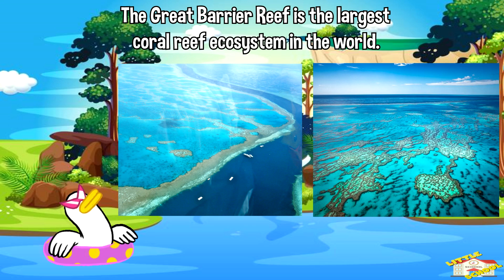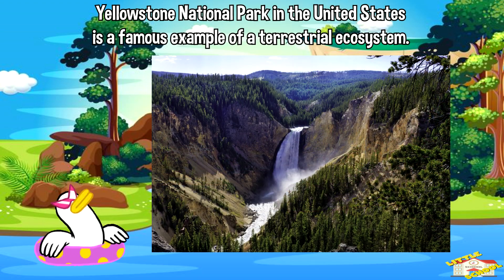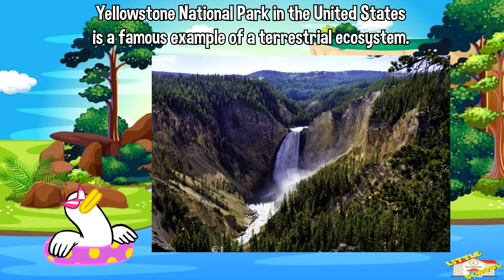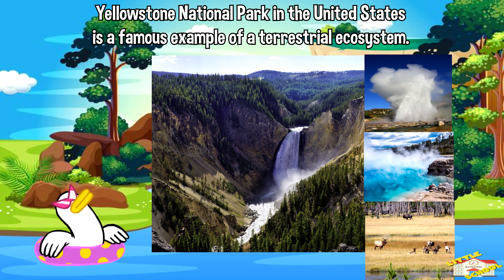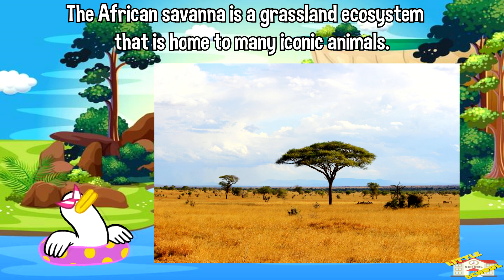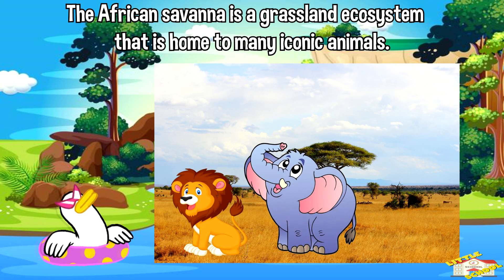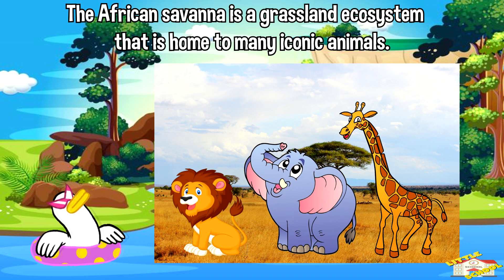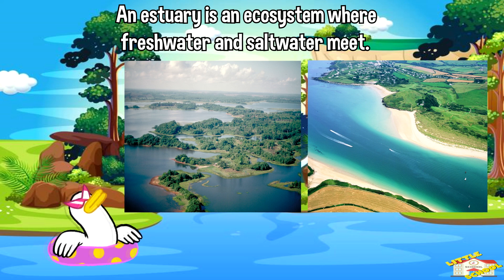The Great Barrier Reef is the largest coral reef ecosystem in the world. Yellowstone National Park in the United States is a famous example of a terrestrial ecosystem, known for its geysers, hot springs, and diverse wildlife. The African savannah is a grassland ecosystem home to many iconic animals such as lions, elephants, and giraffes.